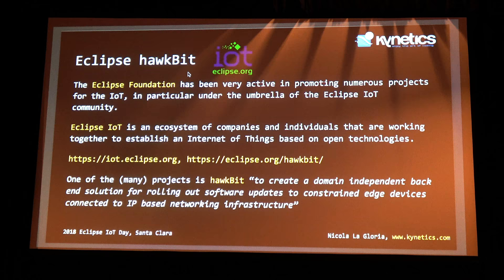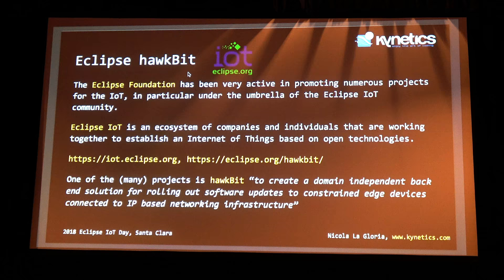We fit the delivery pipeline with Eclipse Hawkbit. Many of you probably know about Eclipse Hawkbit. The definition is: a domain-independent backend solution for rolling out software updates to constrained edge devices connected to an IP-based networking infrastructure. This is broadly what any OTA update system is — you may be familiar with Mender or other platforms. We'll see why we chose Hawkbit.